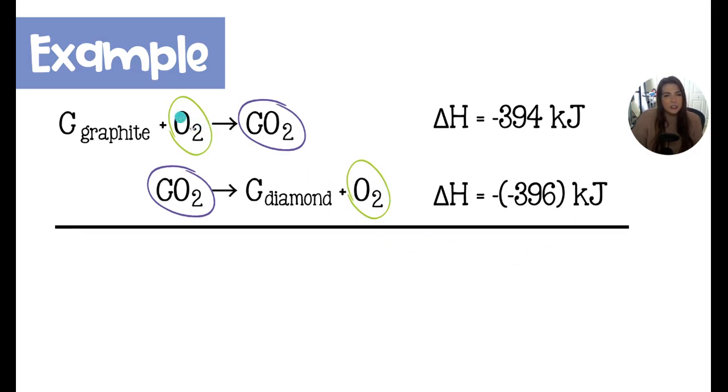Notice that we have an oxygen as a reactant and as a product, so we're going to cancel those. And then we have carbon dioxide as a product and a reactant, and we'll cancel those. When this happens, the summary of our reaction, all that's left over is the graphite and the diamond.